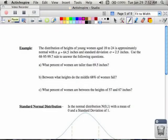An example is we have the distribution of heights of young women from 18 to 24. It's normal with a mean of 64.5 inches and a standard deviation of 2.5 inches. We're going to use the 68, 95, and 99.7 rule to answer the following questions.